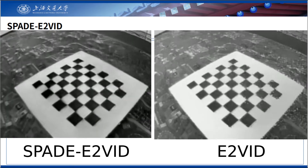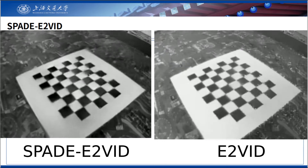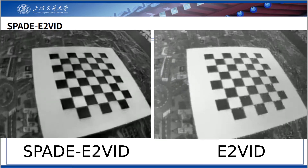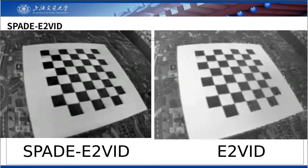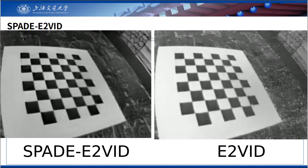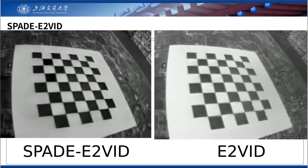There are also event cameras without polarity data. Therefore, we train our model with non-polarity events. Now we see qualitative reconstructions from the CELX-5 event camera.